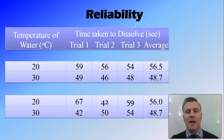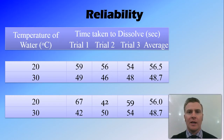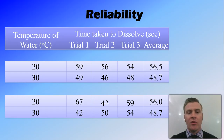Here are two different sets of data from the experiment I've been using as an example — dissolving sugar in water at different temperatures. In this first set of results, you can see that all the numbers are very close to each other. For 20 degrees, the numbers are 59, 56, 54 — only five degrees difference over the three trials. And for 30 degrees, we've got 49, 46, 48 — only three degrees difference. So they're all very close to each other, and these are therefore reliable results.